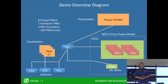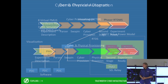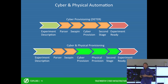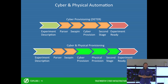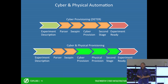So now we're going to take a look at the provisioning workflow. An experimenter will define their experiment, and that experiment definition is sent to a parser. The parser will review the experiment and ensure that the experimenter isn't asking for resources that don't exist. After that, the experimenter will start the swap-in process, which initiates provisioning.